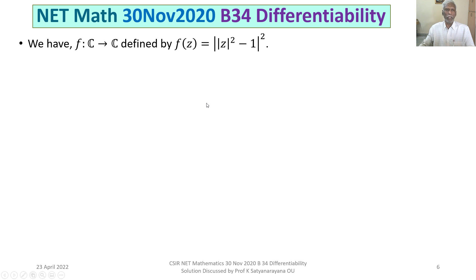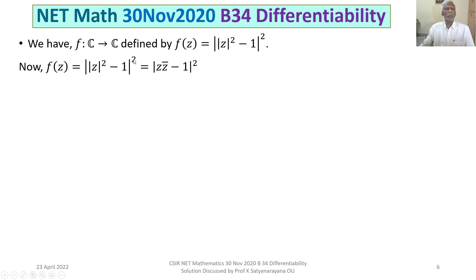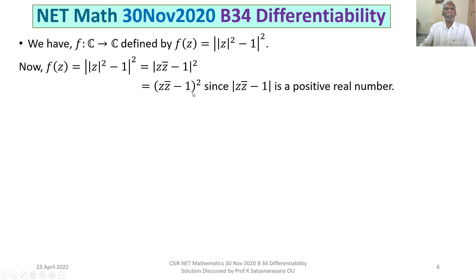We now discuss the solution in detail. f is a function from ℂ to ℂ defined as f(z) = ||z|² - 1|². Now, note that z·z̄ is a real number, so z·z̄ - 1 is also a real number. The modulus of a real number is that number itself (or its absolute value), so we can write f(z) = (z·z̄ - 1)².